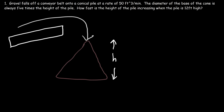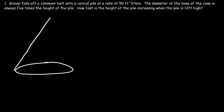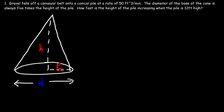Let's focus on the shape of a cone. We have a circular base, and here we have the height of the cone — let's call that H. This part is the radius of the cone, and the diameter is going to be twice the length of the radius, so we can say that d is equal to 2r.